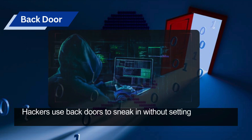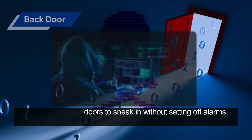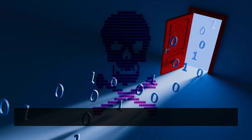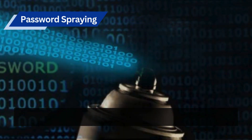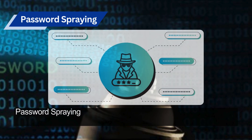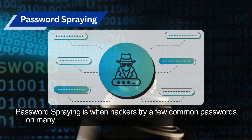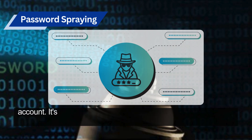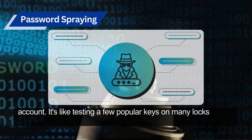A backdoor is a hidden way into a system that bypasses normal security checks. Hackers use backdoors to sneak in without setting off alarms. Password spraying is when hackers try a few common passwords on many accounts instead of trying many passwords on one account.